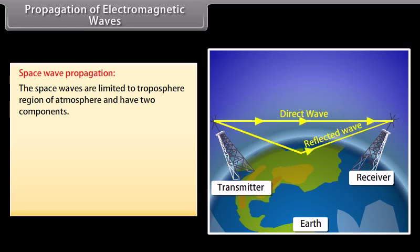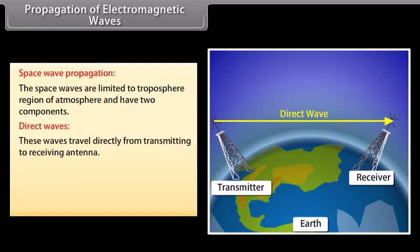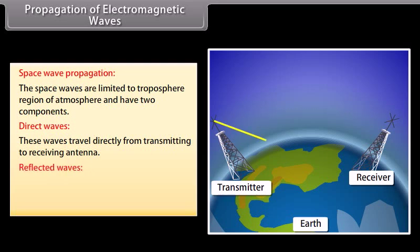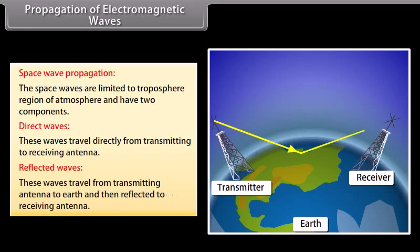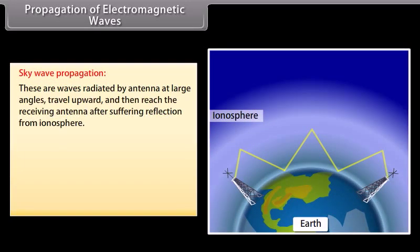Space waves are limited to the troposphere region of the atmosphere and have two components. Direct waves: these waves travel directly from the transmitting to the receiving antenna. Reflected waves: these waves travel from the transmitting antenna to Earth and are then reflected to the receiving antenna.